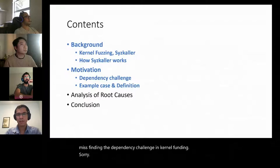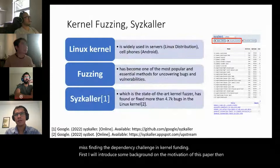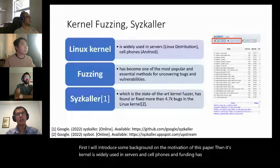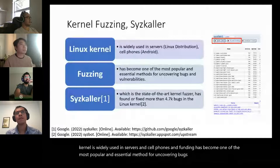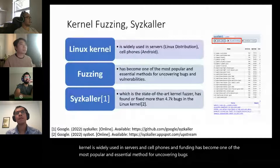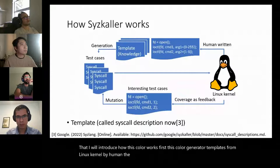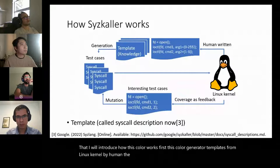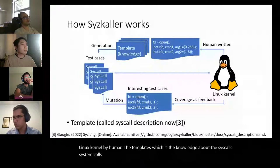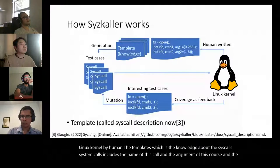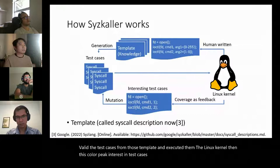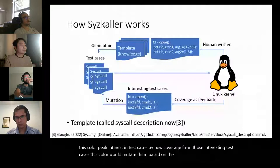First, some background and motivation. The Linux kernel is widely used in servers and cell phones, and fuzzing has become one of the most popular and essential methods for uncovering bugs and vulnerabilities. Syzkaller, the state-of-the-art kernel fuzzer, has found and fixed more than 4,700 bugs in the Linux kernel. Syzkaller generates templates from the Linux kernel — the templates include knowledge about syscalls: their names, arguments, and dependencies. It generates valid test cases from those templates, executes them, and picks interesting test cases based on new coverage, then mutates them to get more test cases.